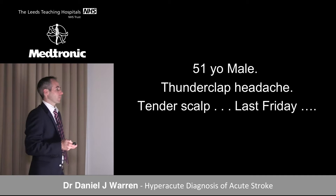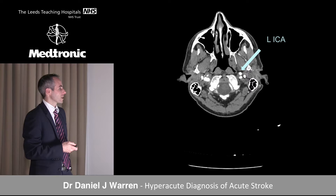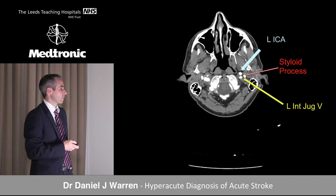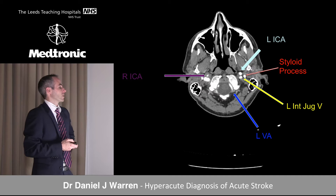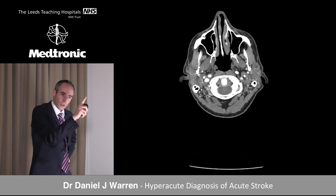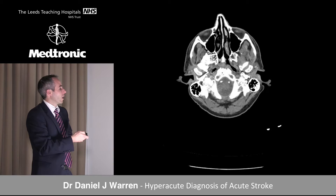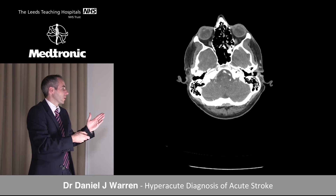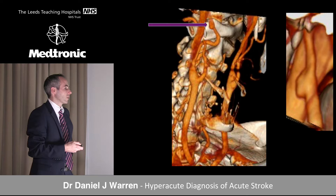Another patient with thunderclap headache and tender scalp. Anatomy confirmed: left internal carotid artery, styloid process, vertebral at the back (V4 segment), right internal carotid. Working systematically up and down each vessel, the right internal carotid shows subtle calibre reduction coming through the carotid canal, returning to near-normal calibre distally — another dissection, in this scenario associated with a pseudoaneurysm as well.